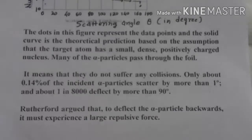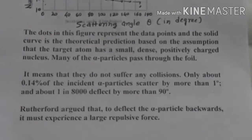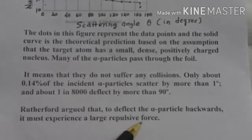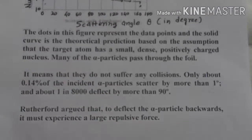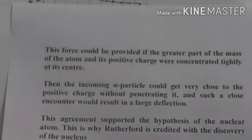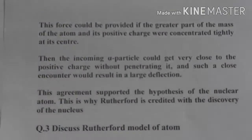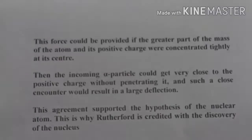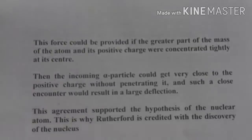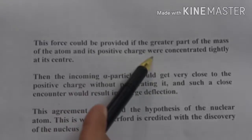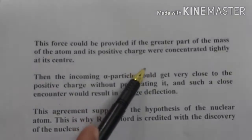With this, Rutherford makes an argument. What is that argument? To deflect alpha particles backward, means at a very large angle, it requires a tremendous amount of repulsive force that makes alpha particles to move back, means to have a backward reflection. And this force could be provided if greater part of the mass of atom and its positive charge were concentrated tightly at center.